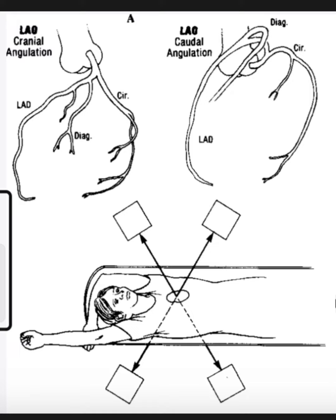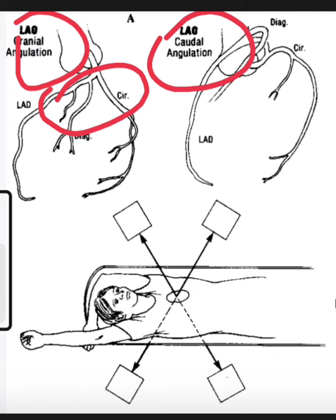Now in the LAO cranial angulation, you can see the base of the circumflex and LAD. While in the LAO caudal angulation, you can see the distal branches of the circumflex and LAD.